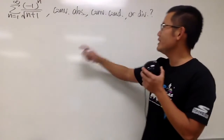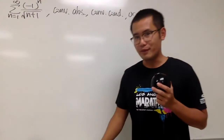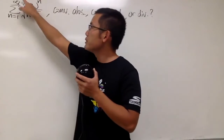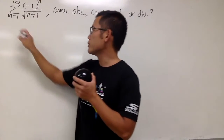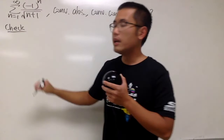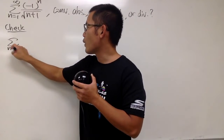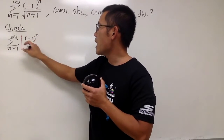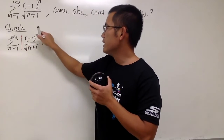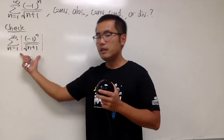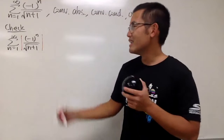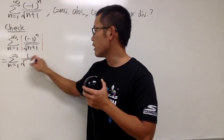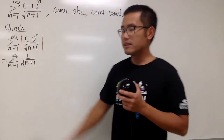We'll see if this next series converges absolutely or conditionally, or maybe it just diverges. We first check the absolute value version. Here we have the sum as n goes from 1 to infinity of the absolute value of (-1)^n over √(n+1). The absolute value makes (-1)^n equal to 1, so we're looking at the sum as n goes from 1 to infinity of 1/√(n+1). Does this converge or diverge?